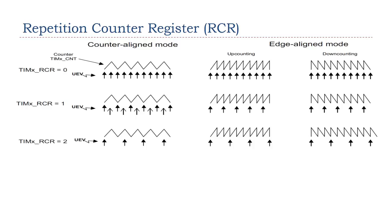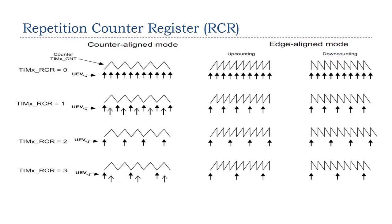When the repetition counter register (RCR) is 2, an update event is generated each third overflow or underflow event. When RCR is 3, an update event is generated each fourth overflow or underflow event.